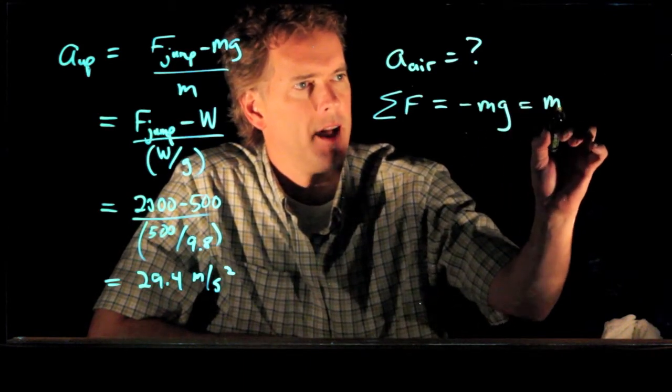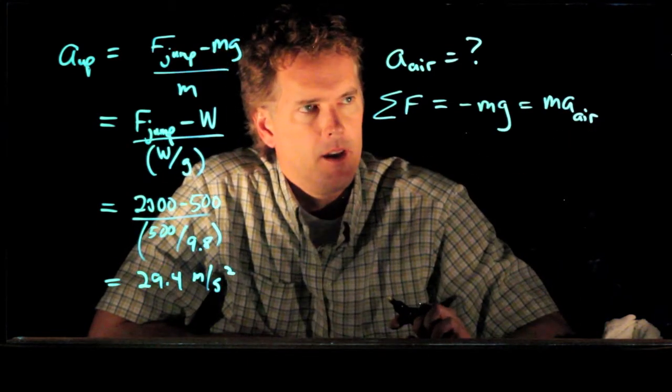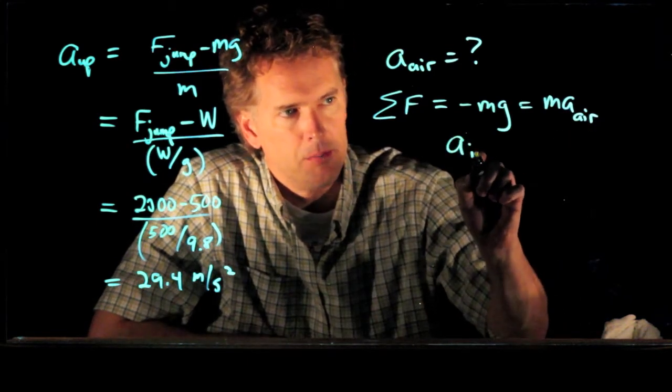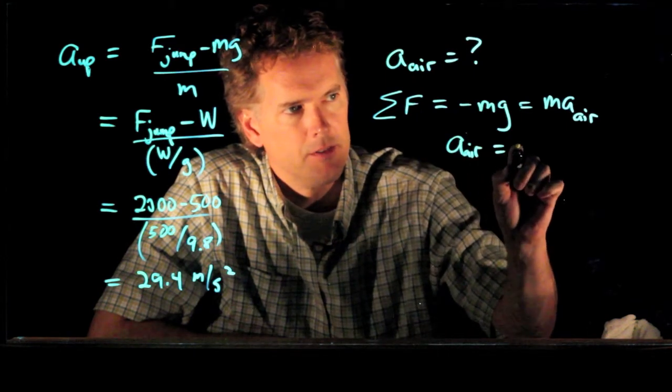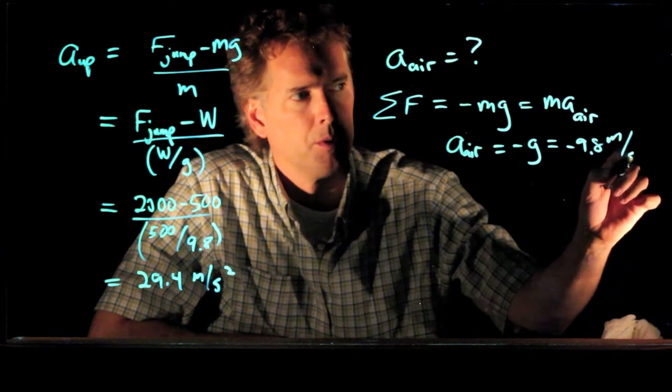That equals the mass times their acceleration while they're in midair. And so A air, like you suspect, is just negative g. Negative 9.8 meters per second squared.